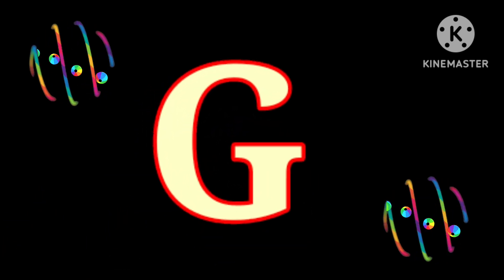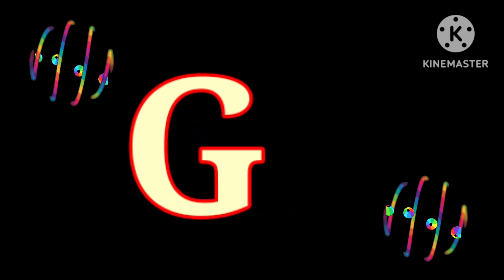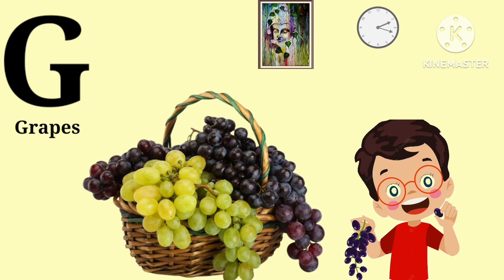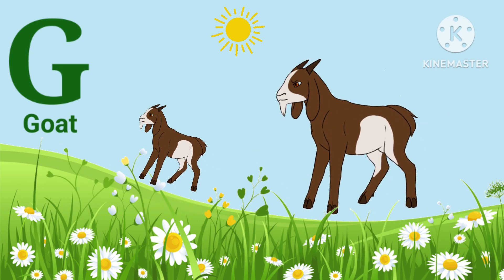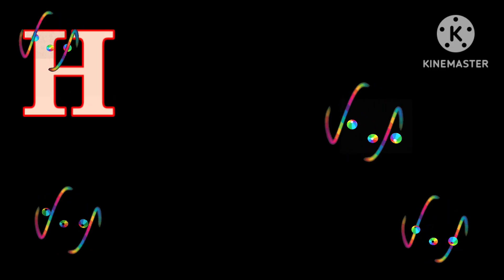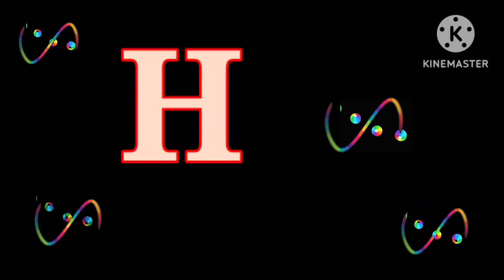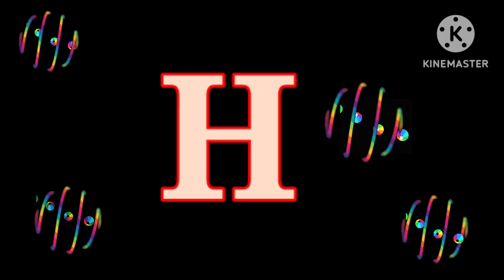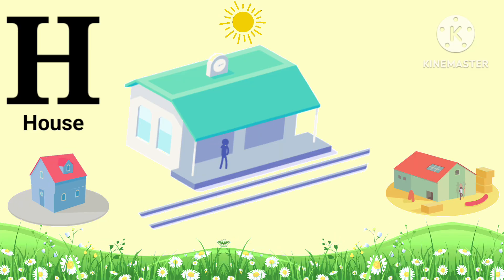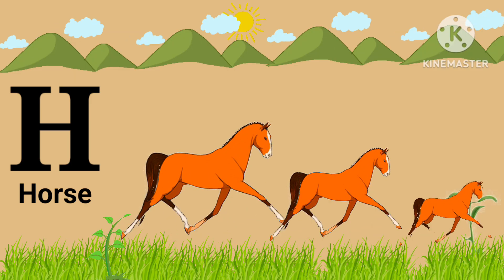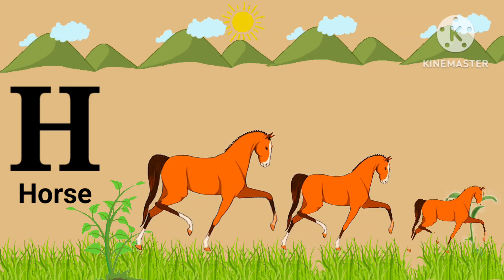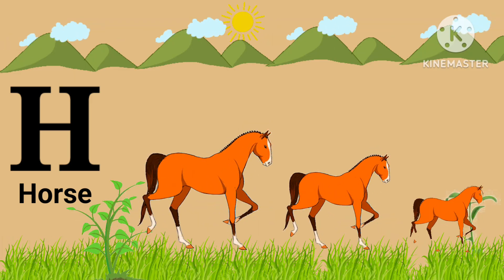G, it's capital G. G for grapes. G for goat, goat. H, it's capital H. H for house, house. H for horse, horse.